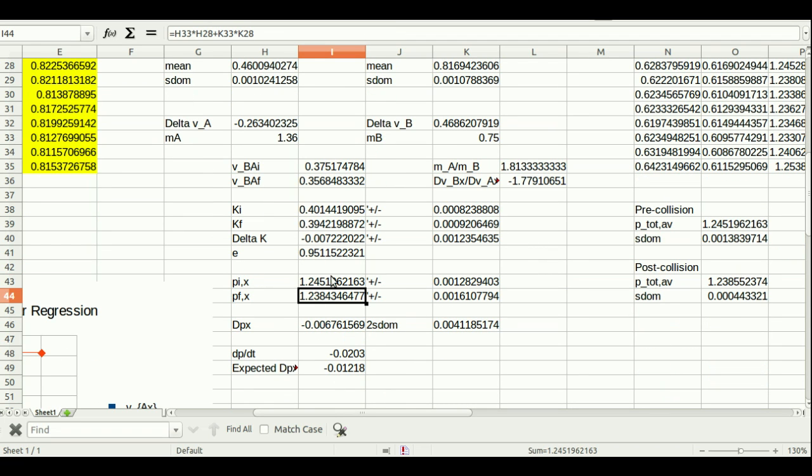Look, they don't quite match do they? But of course this is experiment, we don't expect them to come out exactly the same, there's uncertainty. Well how do we calculate this uncertainty?